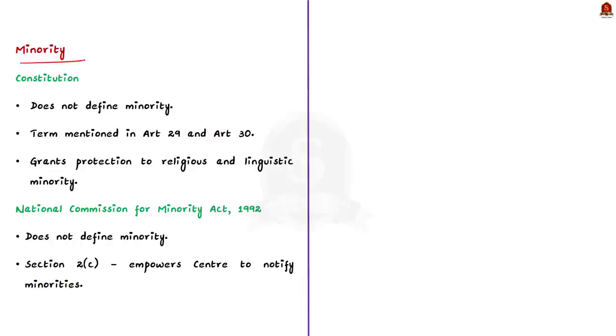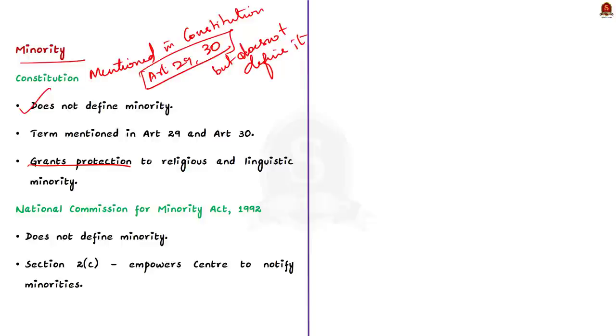This term is mentioned in the Constitution. It has been mentioned in the Constitution only on two occasions, once in the Article 29 and again in Article 30. But remember, in Constitution, the term minority is nowhere defined. Therefore, Constitution mentions the term minority but does not define it. And also, we know that the Constitution grants protection to religious and linguistic minorities.